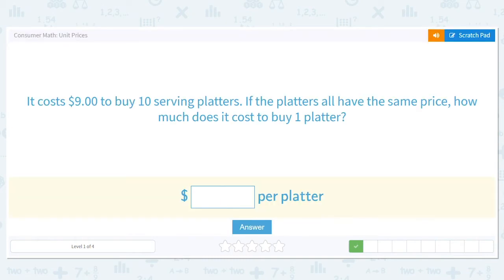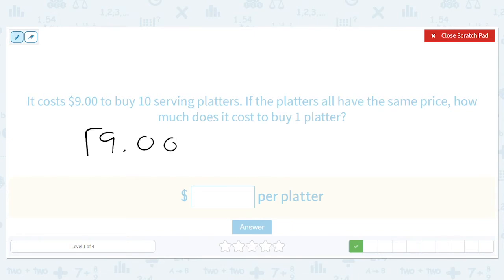It costs $9 to buy 10 serving platters. If the platters all have the same price, how much does it cost to buy one platter? Well, it's just $9 divided by 10. But dividing by 10 has a trick, right? I think we should use the trick, which is you just move the decimal place over one. So it should just cost 90 cents a platter.